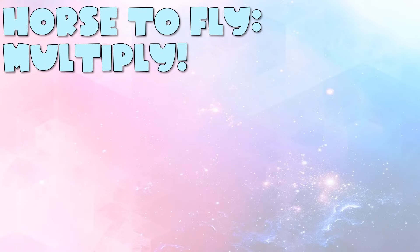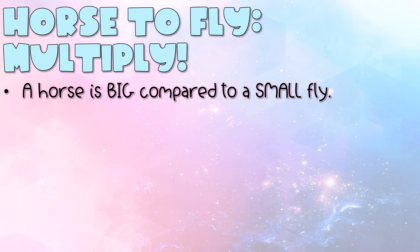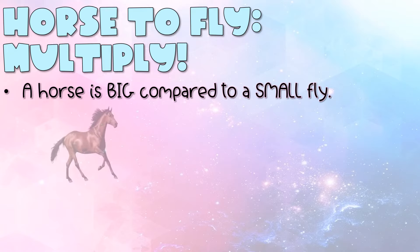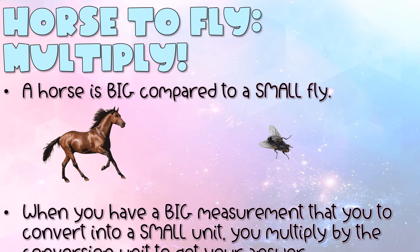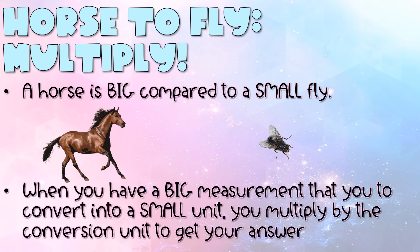Whenever you have a big unit you're trying to convert to a small unit, use the memory device called 'horse to fly, multiply.' A horse is big compared to a small fly — so when you have a big measurement to convert into a small unit, you multiply by the conversion unit to get your answer. That's where the memory device comes from — it rhymes and it's easy to remember.